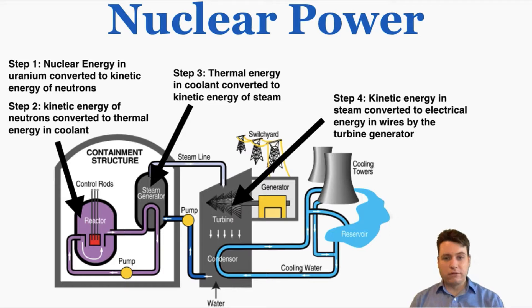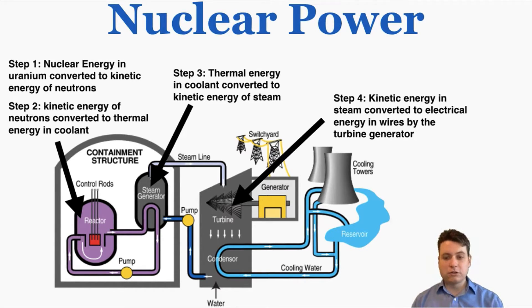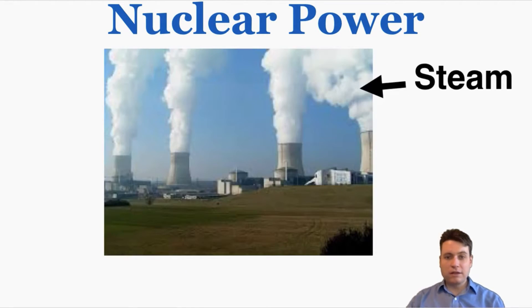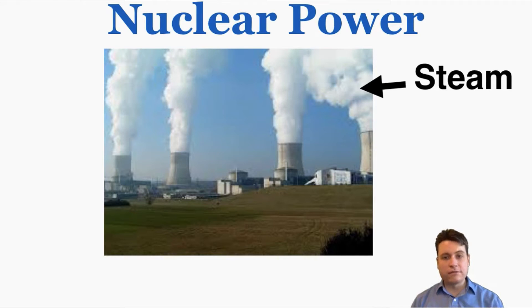Even though nuclear power involves incredibly complicated physics, it's still ultimately just spinning a turbine to make a generator turn. After the steam is used to turn the turbine, it's condensed back into water in the condenser, and some steam is released by the cooling towers. If you've ever seen pictures of an operational nuclear power plant with stuff coming out of the cooling towers, that's completely harmless steam — not CO2 or other greenhouse gases. Steam behaves very differently in the atmosphere.